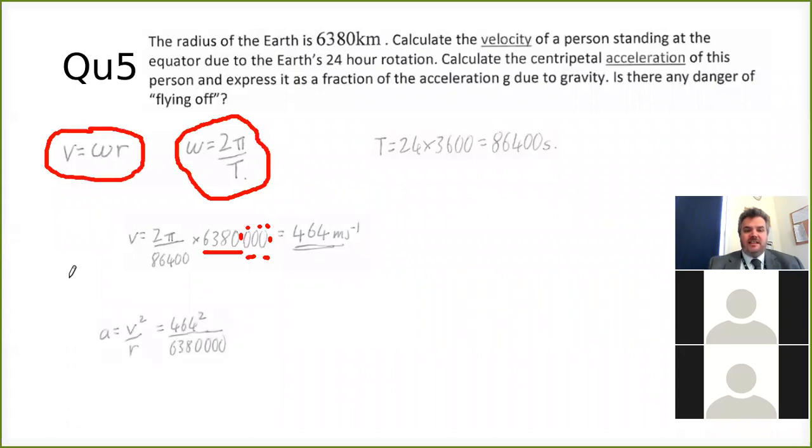That's the first part of the question there. So we want to work out the velocity of the person. We've done that bit. So now we want to calculate the centripetal acceleration. So again, it's force is mv squared over r. So we divide by m to get v squared over r. That gives us acceleration. So the speed is whatever we calculated before goes into the v. We've got to square it, divide it by 6,380,000. And we work out the acceleration, which comes out to be 0.034 meters per second squared. So we calculate the centripetal acceleration, but then you want to express it as a fraction of the acceleration due to gravity.